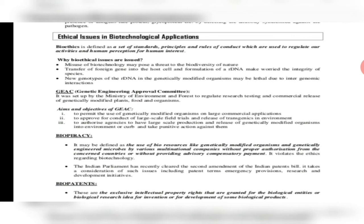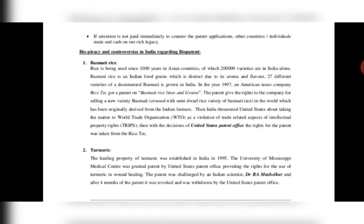Biopatenting grants exclusive intellectual property rights (IPR) for biological entities or biological research ideas. You can patent a biological product. If attention is not paid immediately to counter patent applications, other countries will use your product. For example, this has happened to India in the case of basmati rice — basmati rice has been grown in India for thousands of years, but it became a patent of the United States because they had patented it first. It is like stealing, yet nothing could be done because the product was not registered in India's name.